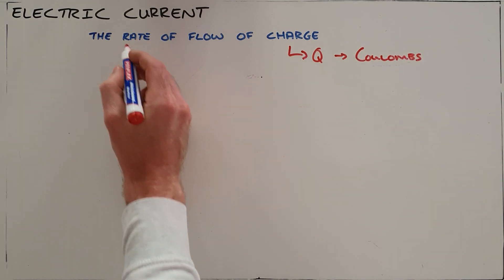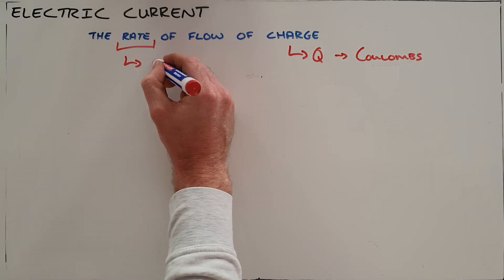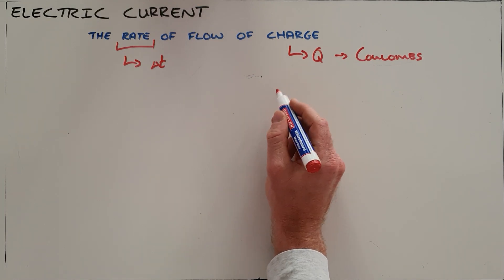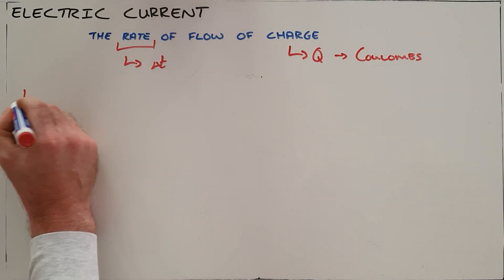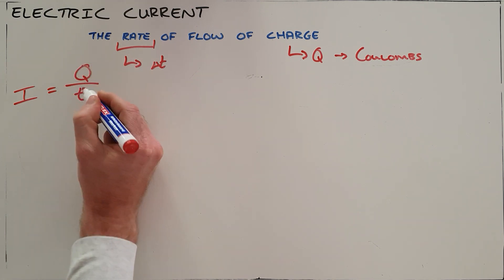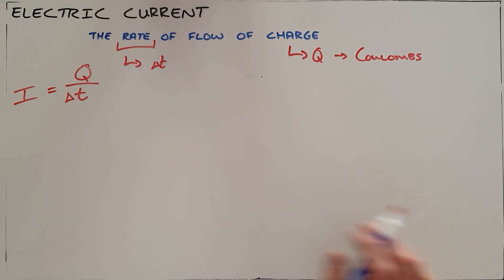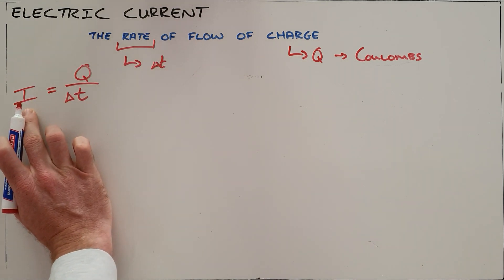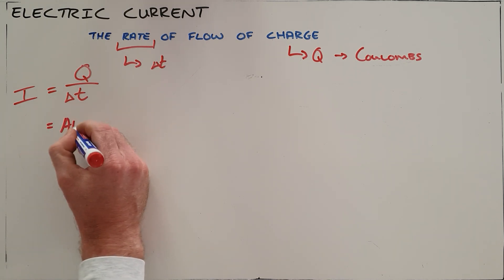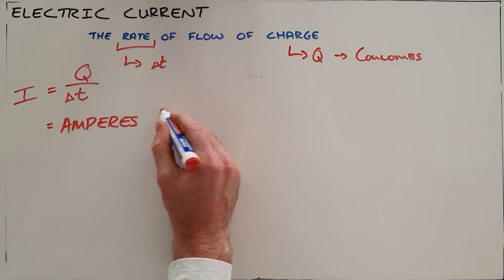Whenever we speak about the rate of something, we're saying how much of that per unit time. From this definition we get the formula for electric current, which tells us that current is the amount of charge that flows past a point in a circuit per unit of time. Current has the symbol I and is measured in amperes, abbreviated with an A.